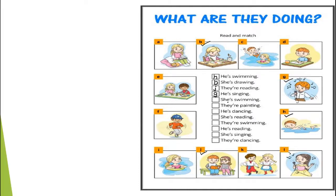Next sentence: she is swimming. Find the picture — and here it is, at I. Next: they are painting. Here is the picture for the sentence — at E. Next sentence: he is dancing. And the picture for this sentence is here at F.